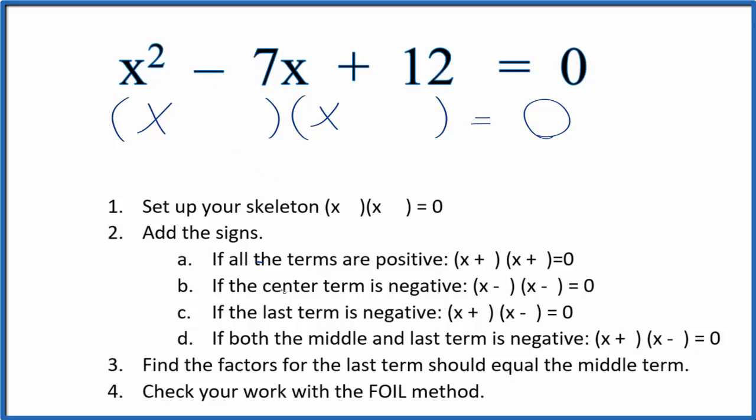If we have a negative in the center, then we'll have x minus and x minus. So we can put those in: x minus, x minus. Now we can find the factors for the last term, that's the 12.